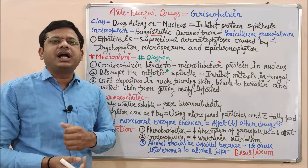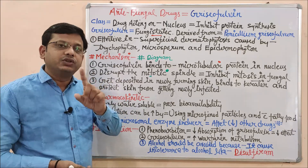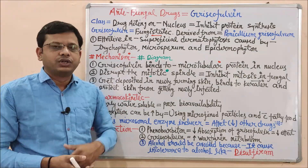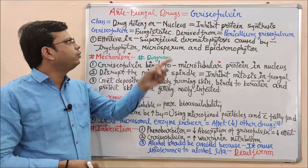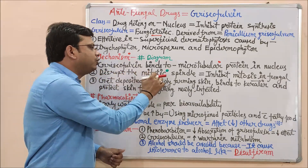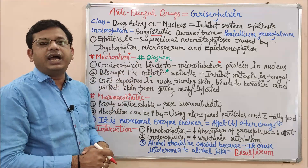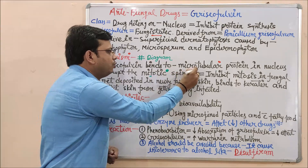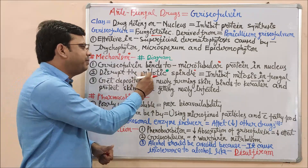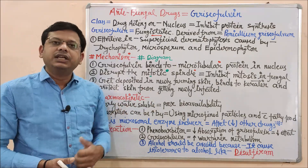It binds to microtubular protein inside the fungal cell nucleus. Keep in mind that fungal cell nucleus has a nuclear membrane — this is a characteristic feature because fungal cells are examples of eukaryotes. So: drug acting on nucleus of fungal cell. This binding disrupts the mitotic spindle — this is very important. Also understand the basic difference between mitosis and meiosis.